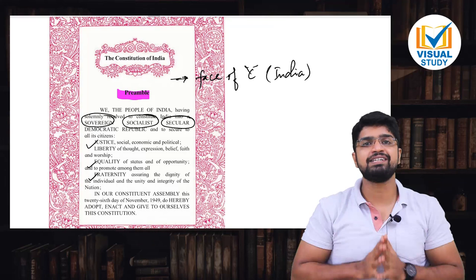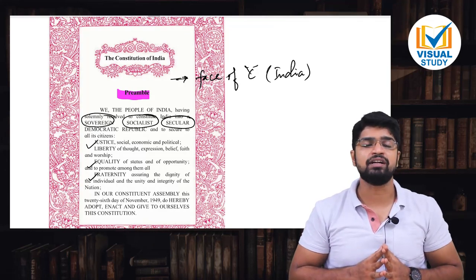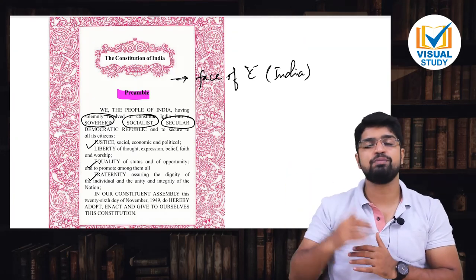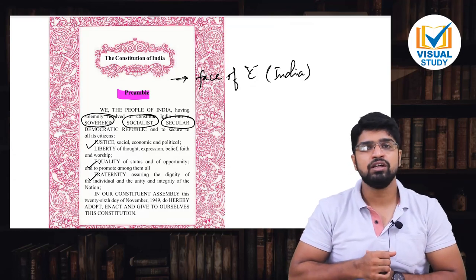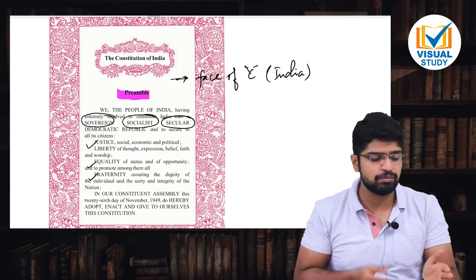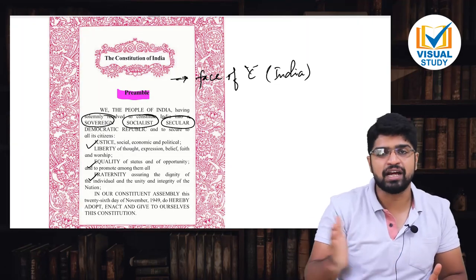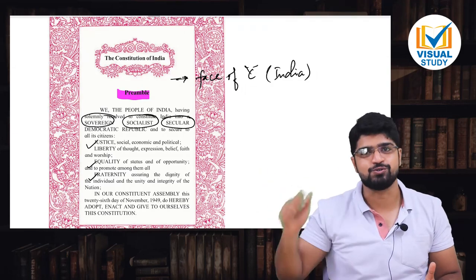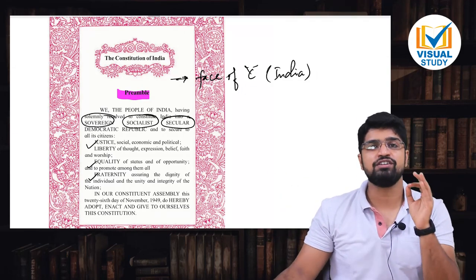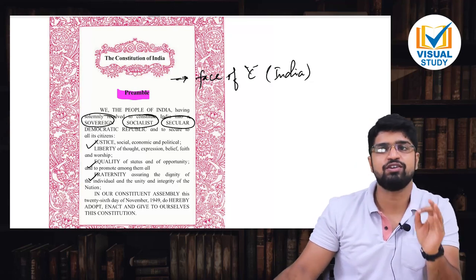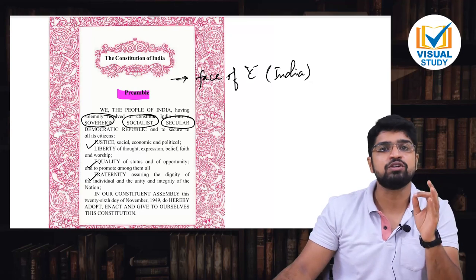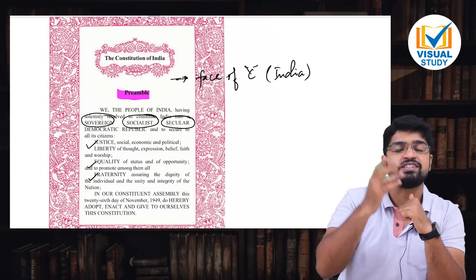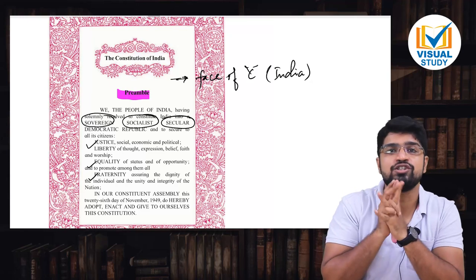Har ek deshwasi ko, aapne desh mein, humare Bharat desh mein, every citizen has its own dignity. He can live with respect. Rather it is his right to live with respect, right to live with harmony, and more importantly, right to live with unity with everyone. It is his right. Nobody is giving him as a favor, it is his right. And this whole samvidhan, this is when we present it. Baba Saheb Ambedkar committee which was formed under the chairmanship of Dr. Baba Saheb Ambedkar. And he was given the right to do also by the first prime minister of India, Pandit Jawaharlal Nehru.